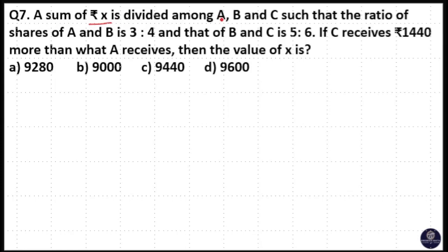A sum of Rs. x is divided among A, B, and C such that the ratio of shares of A and B is 3 is to 4, B and C is 5 is to 6. If C receives 1440 more than what A receives, then the value of x is.